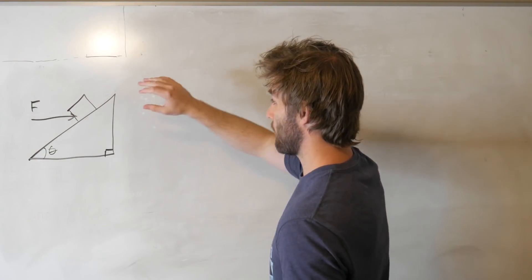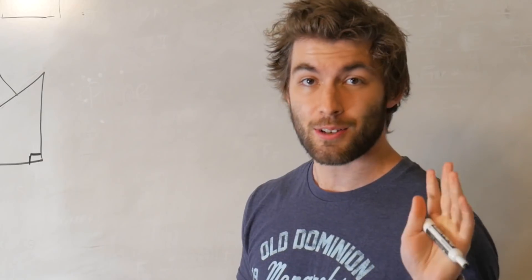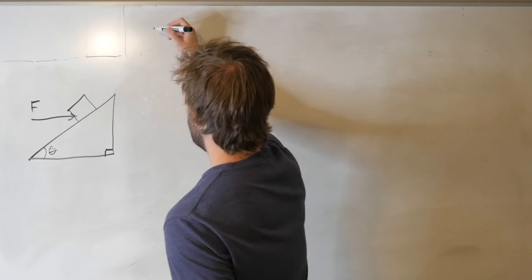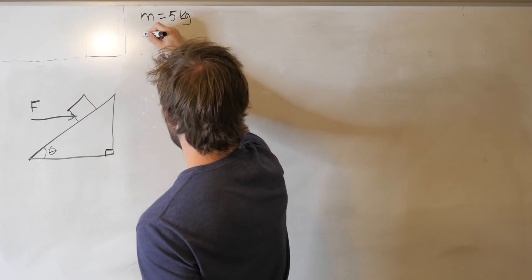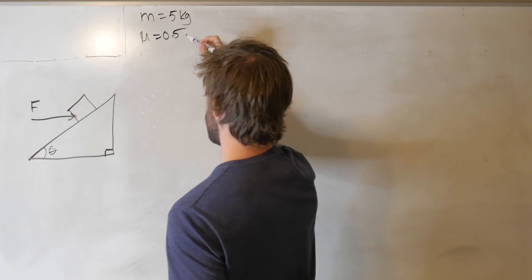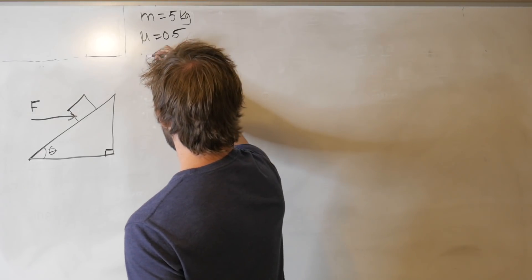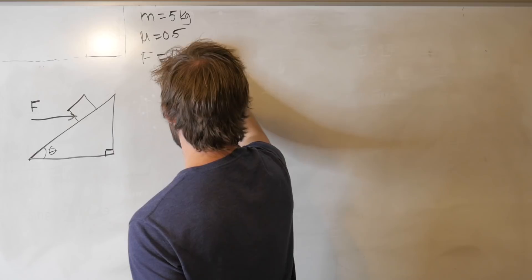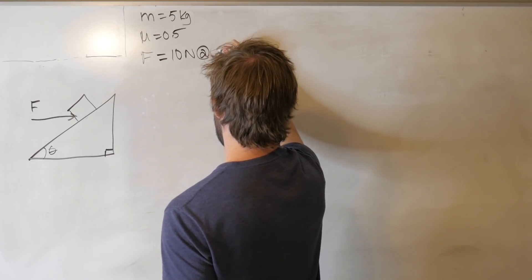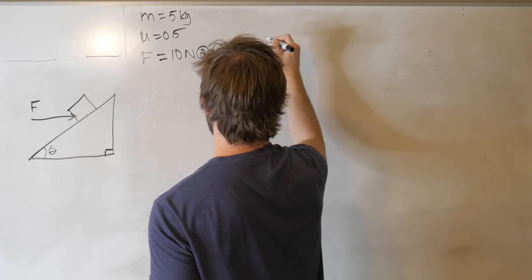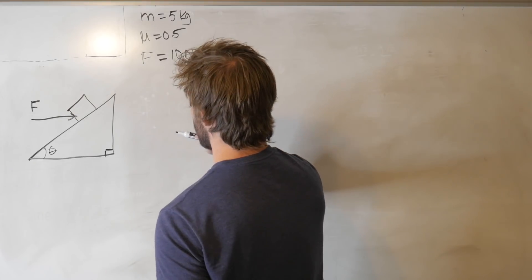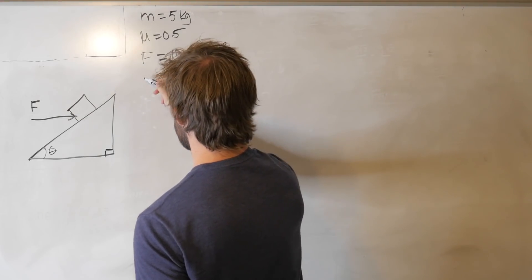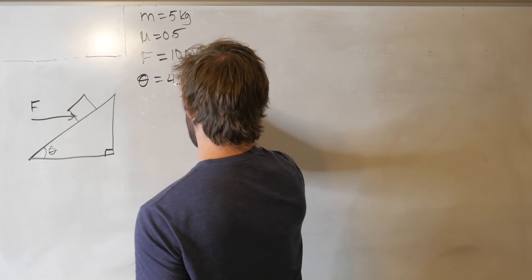I'm going to write some values up here for these forces and angles, but we're not plugging values in right away — we're going to keep stuff in variable form as long as possible. We're going to let the mass equal 5 kilograms, mu equal 0.5 (this is the coefficient of static friction), the applied force equal 10 newtons, the applied force direction be 0 degrees — so purely horizontal — and let theta equal 45 degrees.